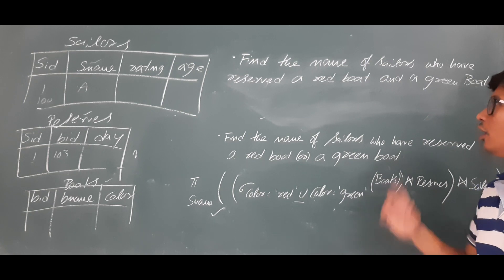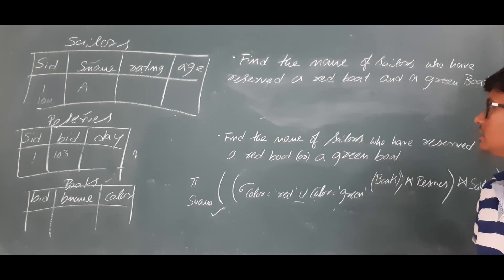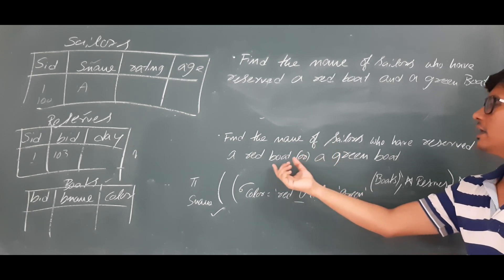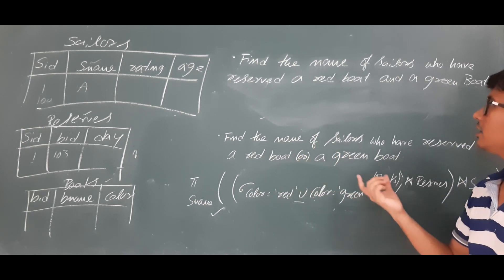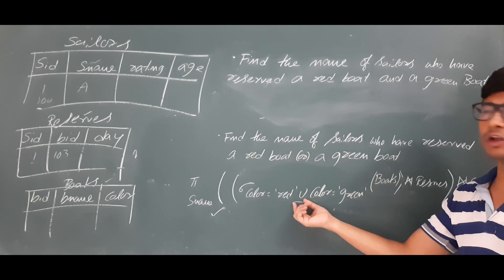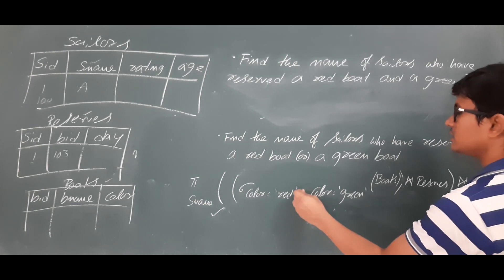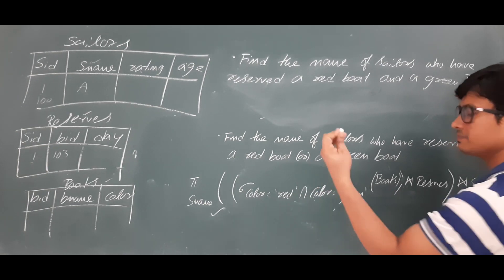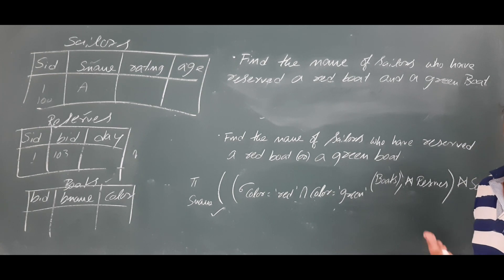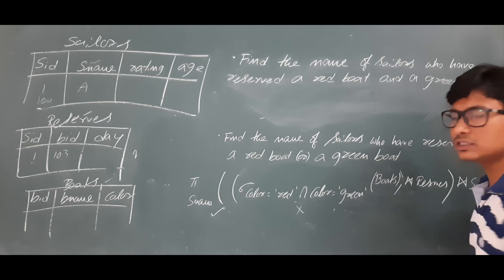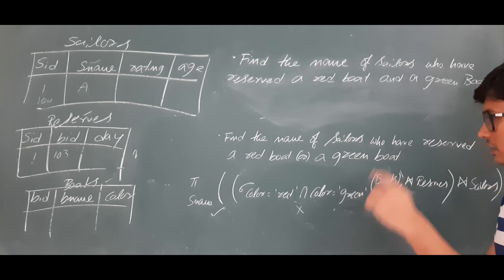Many people will make a mistake here. They think it is very simple — in the last video we explained the red boat or green boat query using the set union operator, so they just change it to set intersection. But that is not the correct answer.